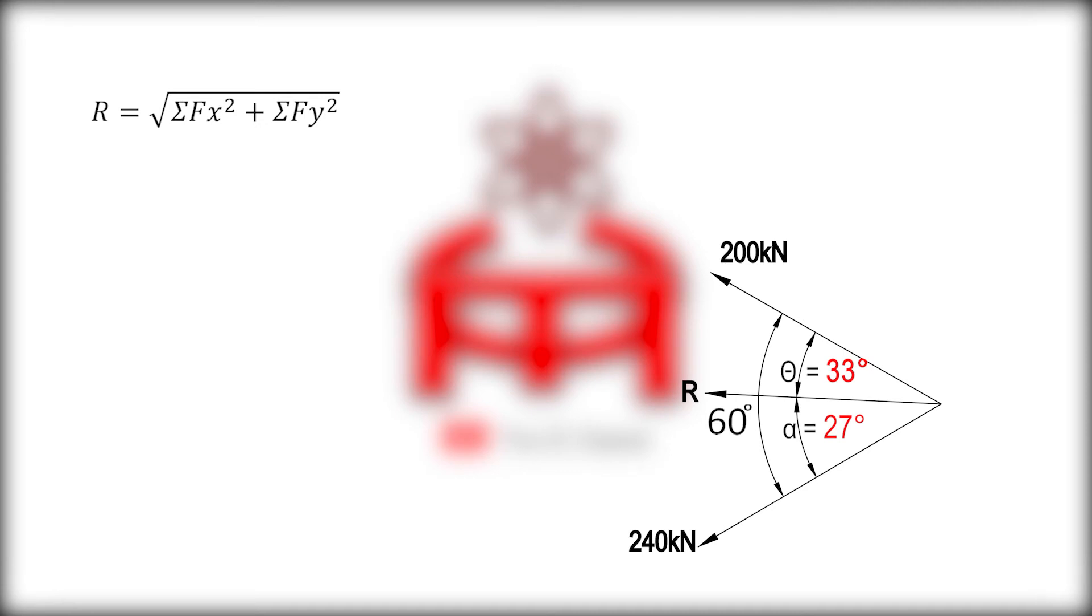Let us first solve summation of forces along x equals negative 200 cosine theta minus 240 cosine alpha. Substituting the angle values of theta and alpha results in negative 381.5.